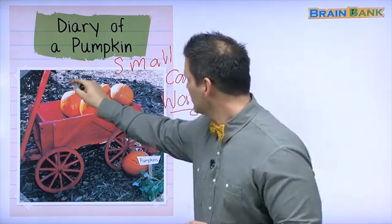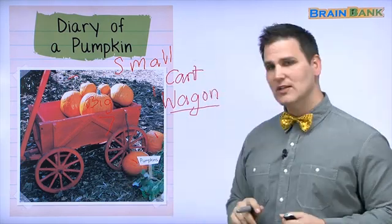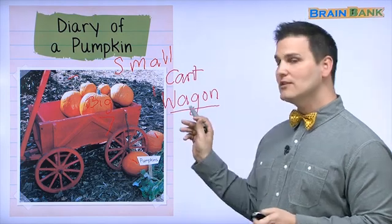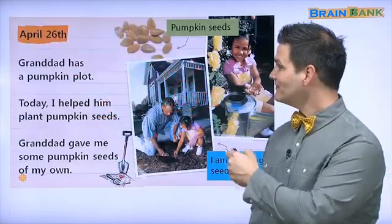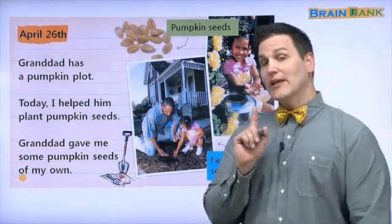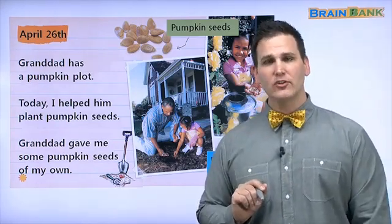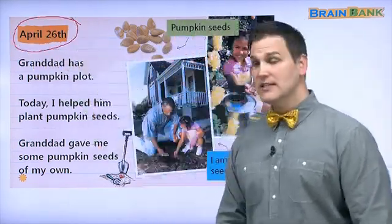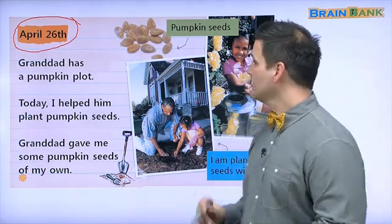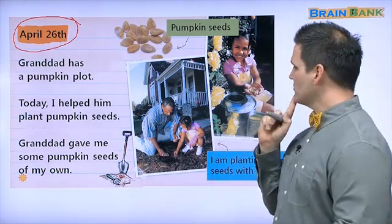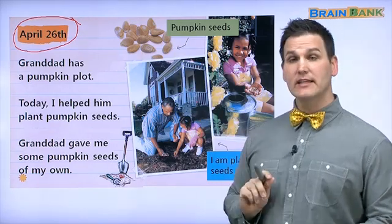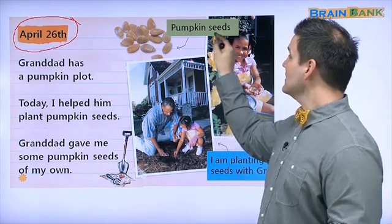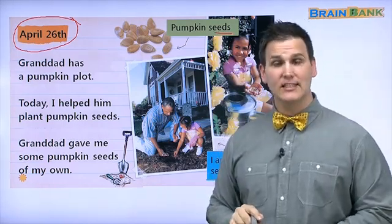Now, can you see here? Looks like some wood chips. Let's look at the next page. In a diary, we always have to put the date. So, this is April 26th. Let's look at some of the pictures. Here, we have pumpkin seeds or hobok seeds. Seeds in Korean is seat.